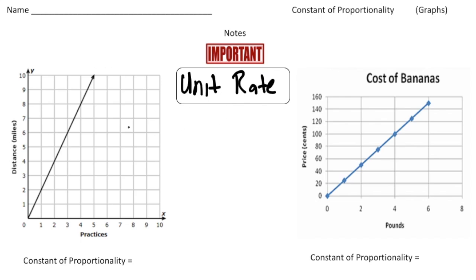Let's try to figure out the constant of proportionality of this graph. Anytime you have a graph, you have to try to find a point that's really easy to read. Let's go through this graph and try to find points that are really easy — here's one, and there's another one, and maybe another one right here. This graph has lots of easy points to read, but all you need is one.